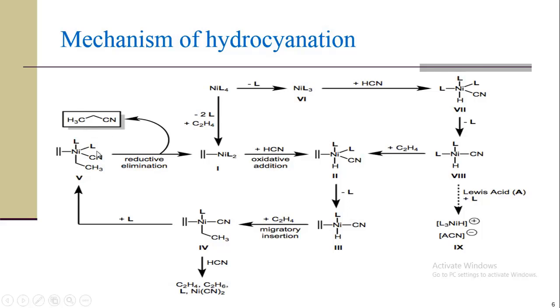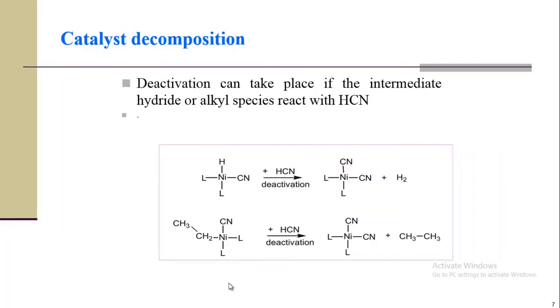After that, reductive elimination step will take place and we will get CH3-CH2, and then CN will be removed. CH3-CH2-CN will be formed, we will get alkyl nitrile. And if another CN is added, then we will get C2H4 or C2H6. This is the drawback of the hydrocyanation which will be explained in the next slide.